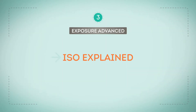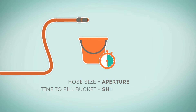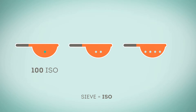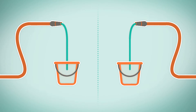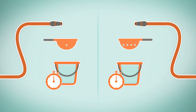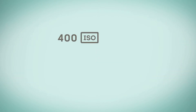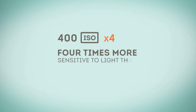To get a clearer understanding, let's go back to our bucket illustration. Remember that hose size equals aperture, and time to fill the bucket equals shutter speed. Let's add a sieve with a certain number of holes that represents ISO — one hole equaling 100 ISO, two holes 200 ISO, four holes 400 ISO, and so on. Keeping our hose size constant, the buckets should fill at the same speed. Placing the sieve between the hose and the bucket will affect the speed at which the buckets fill. Our four-hole sieve will fill the bucket four times faster than our one-hole sieve, meaning 400 ISO is four times more sensitive to light than 100 ISO.